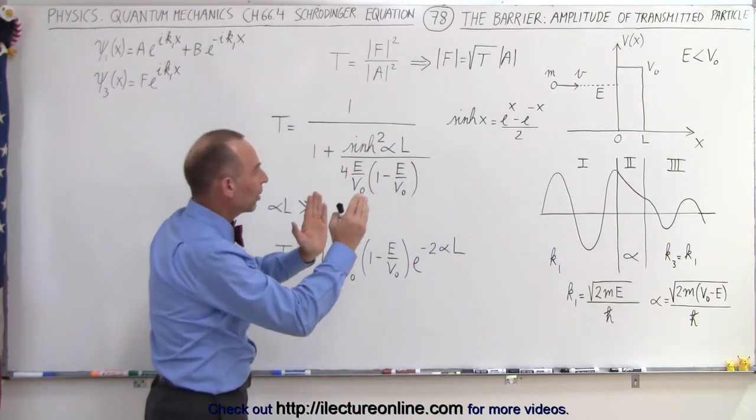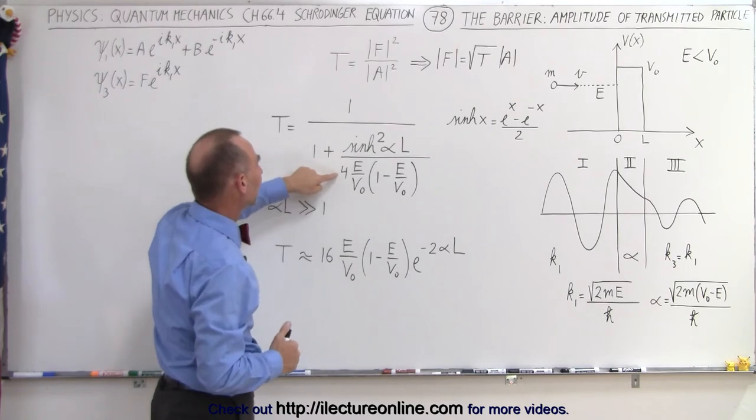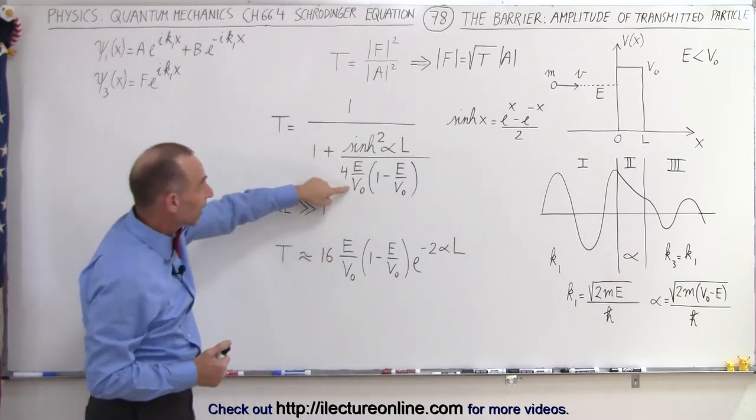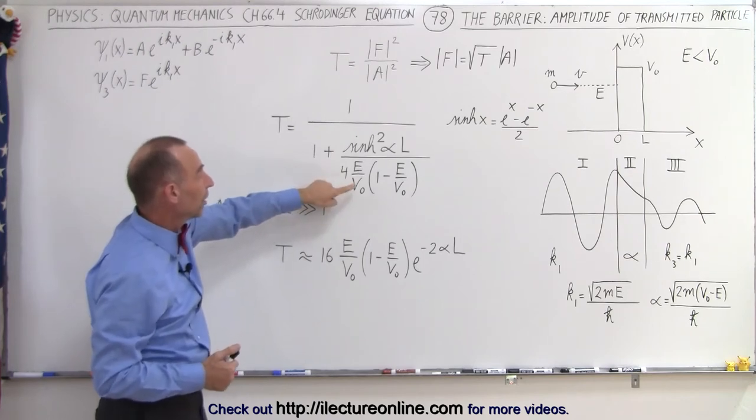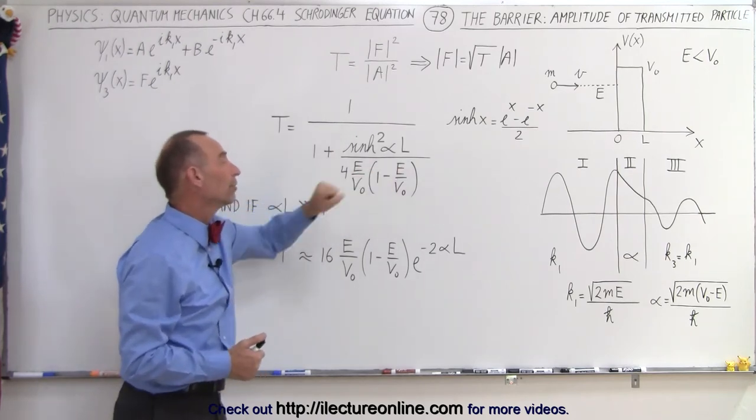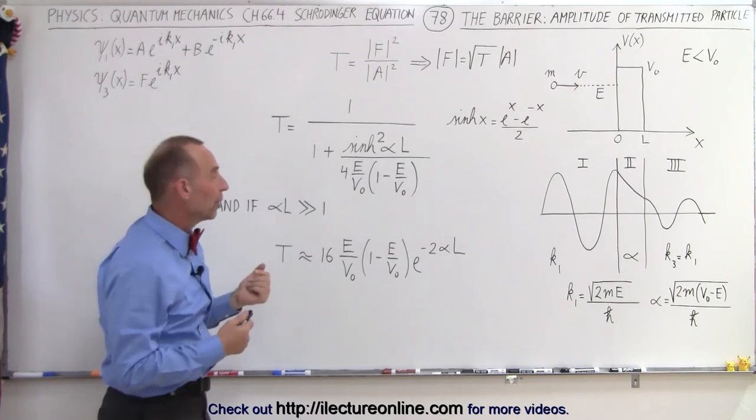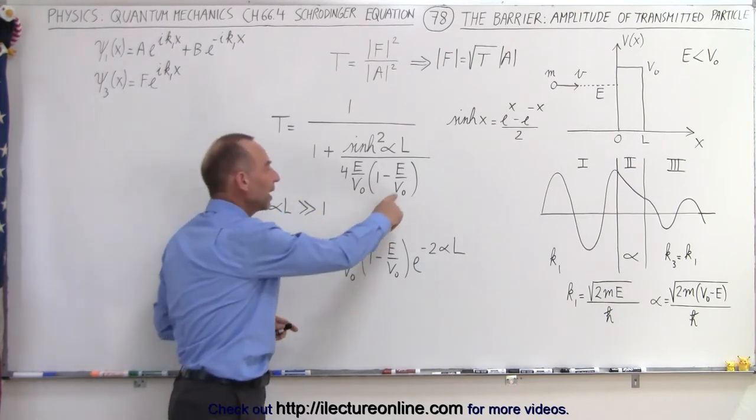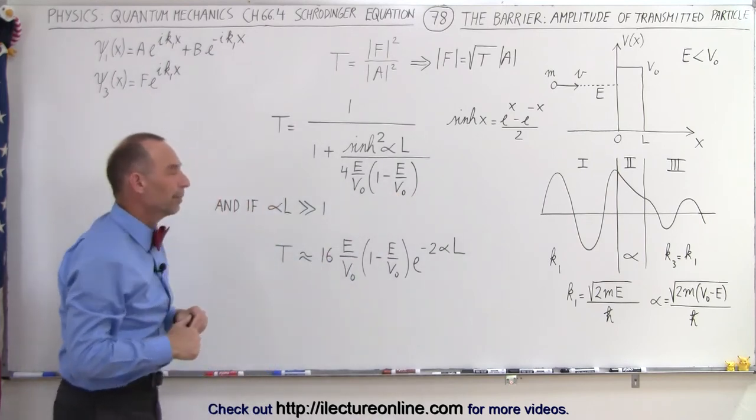Divided by 4 times the ratio of the energy of the particle divided by the potential of the barrier times the quantity 1 minus the ratio of the energy of the particle divided by the potential of the barrier.